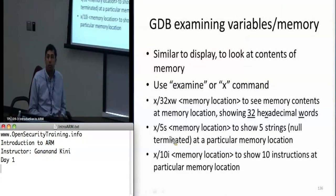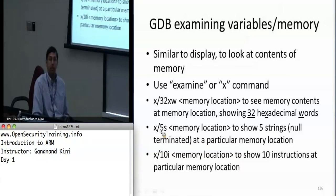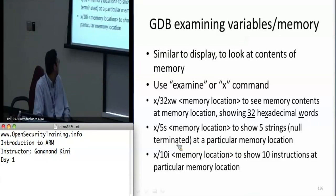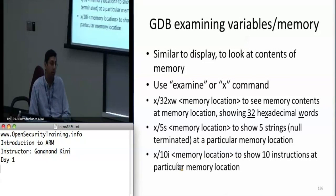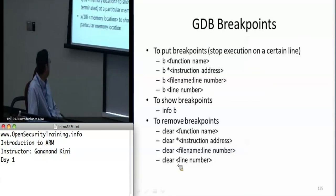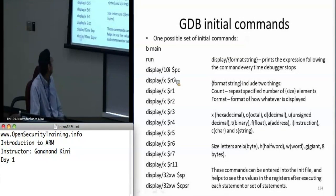Another way to format your examine output: '32xw' means show me 32 hexadecimal words starting at this memory location. Similarly, '/5s' shows 5 strings at that memory location, and '/10i' shows 10 instructions. The '/10i' is useful when you're looking at instruction memory and want to decode opcodes at a particular memory location. In the initial commands file you use 'display' with this format so it always displays 10 instructions every time you step.